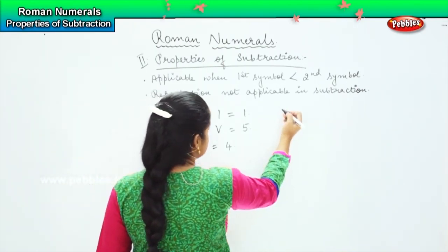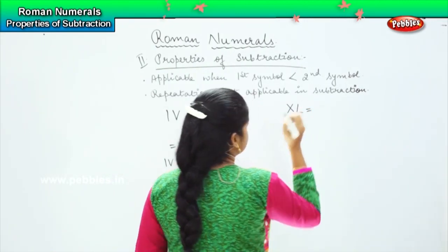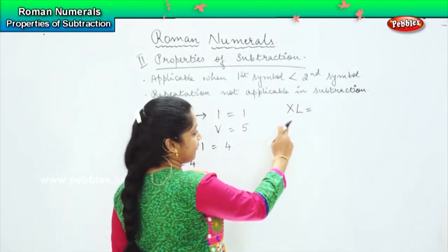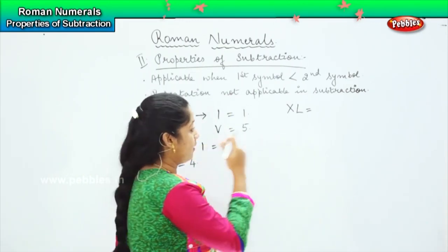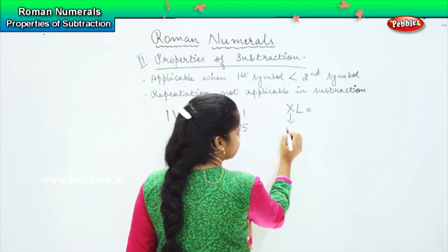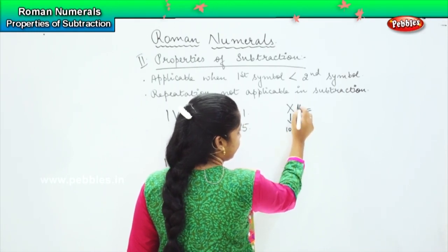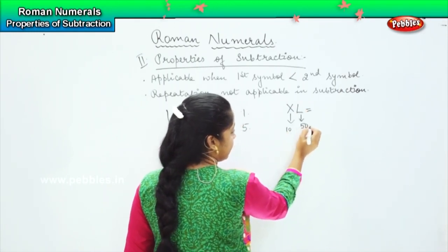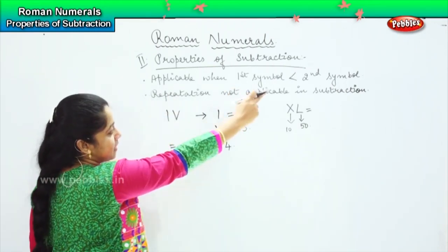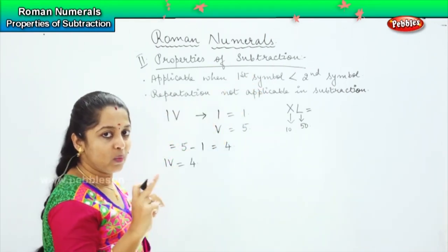Similarly, if I were to write XL, can you tell me what is the value? We know that if we arrange in order, X comes before L. The value of X is 10, the value of L is 50. So we know that as per the rules, if the first symbol is lesser than the second symbol we need to do a minus.